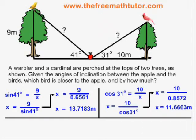Cosine of 31 is equal to 10 over x. I plug the values into the formula and simplify, and I get an answer of 11.6663 meters, again rounded off to four decimal places.